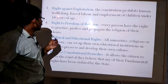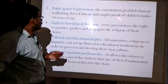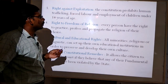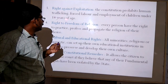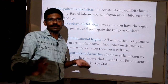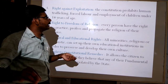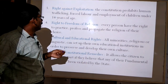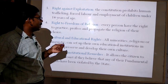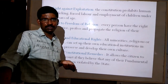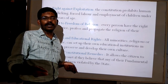The third fundamental right is the right against exploitation. The constitution prohibits human trafficking, forced labor, and employment of children under 14 years of age. All these exploitations are legally prohibited under the right against exploitation.